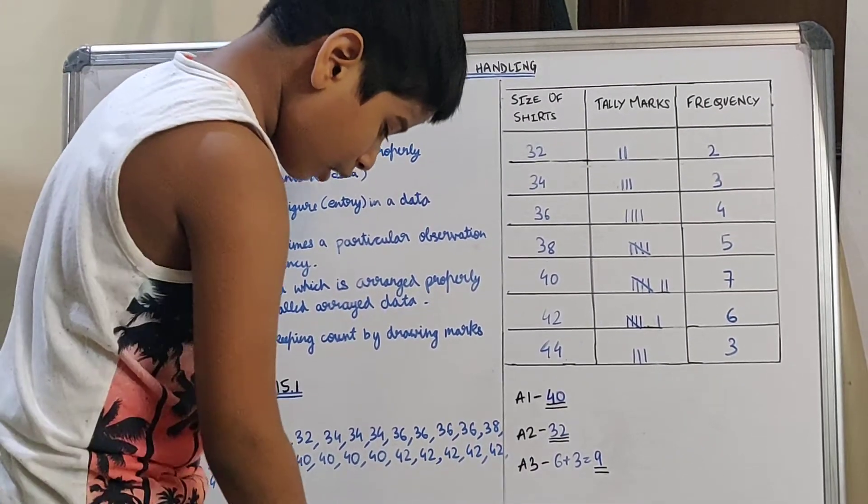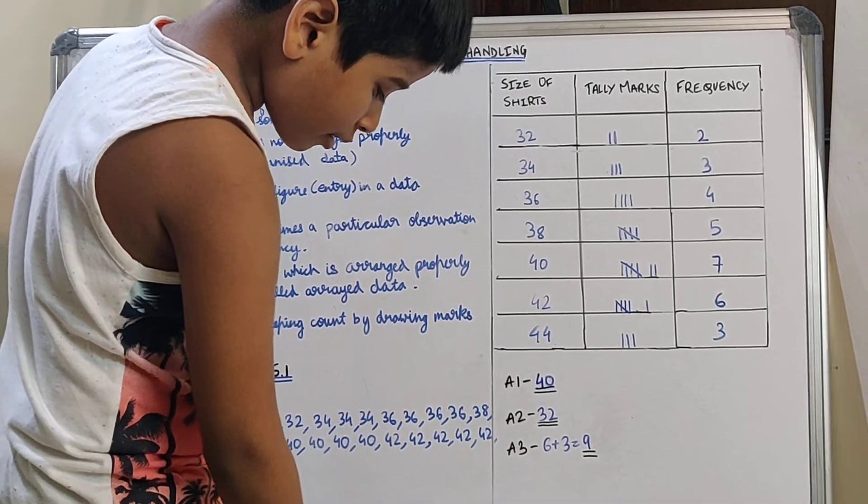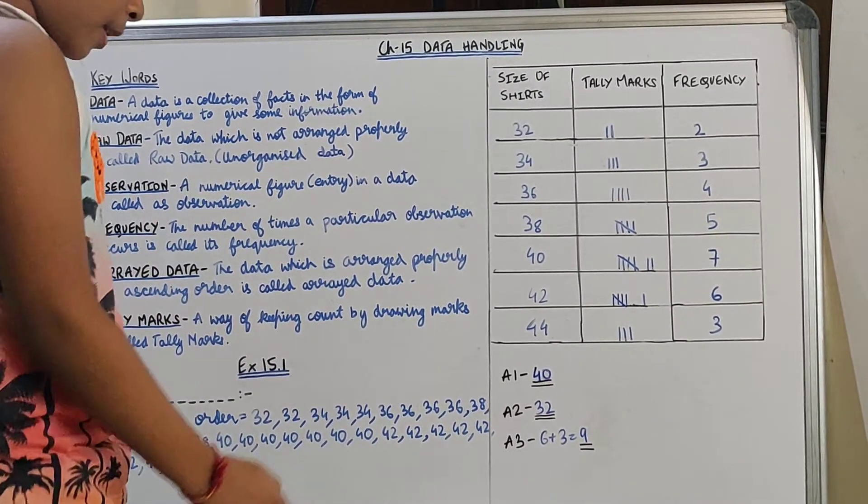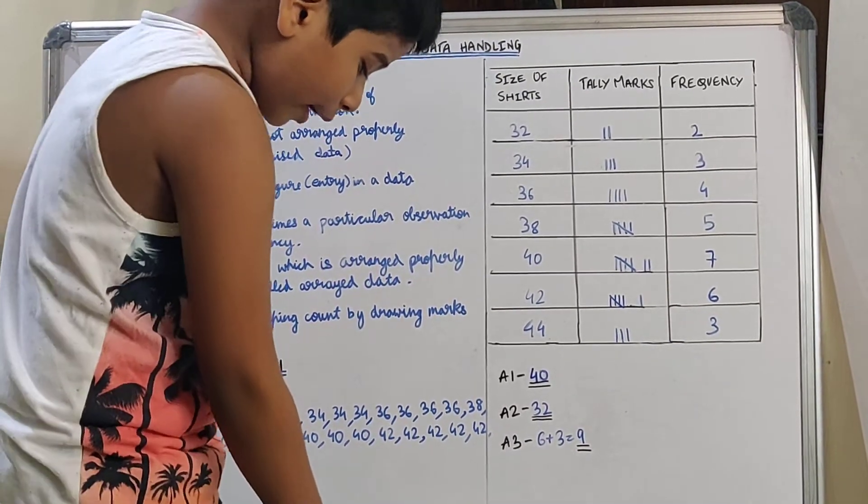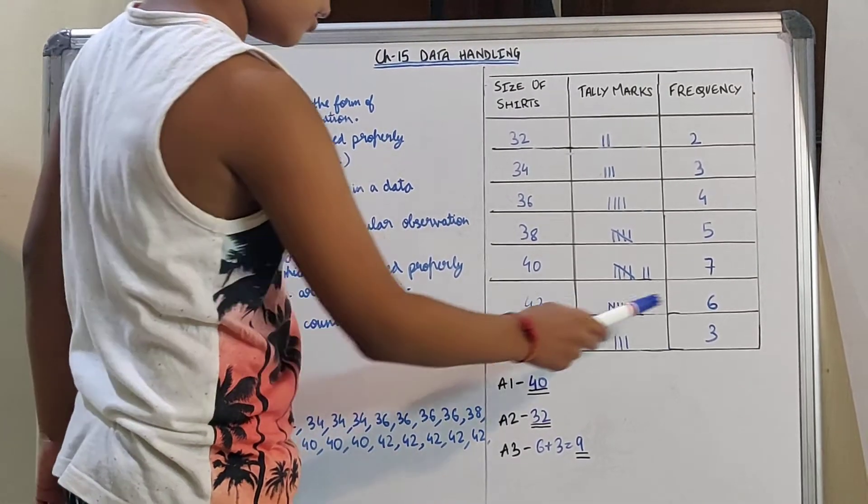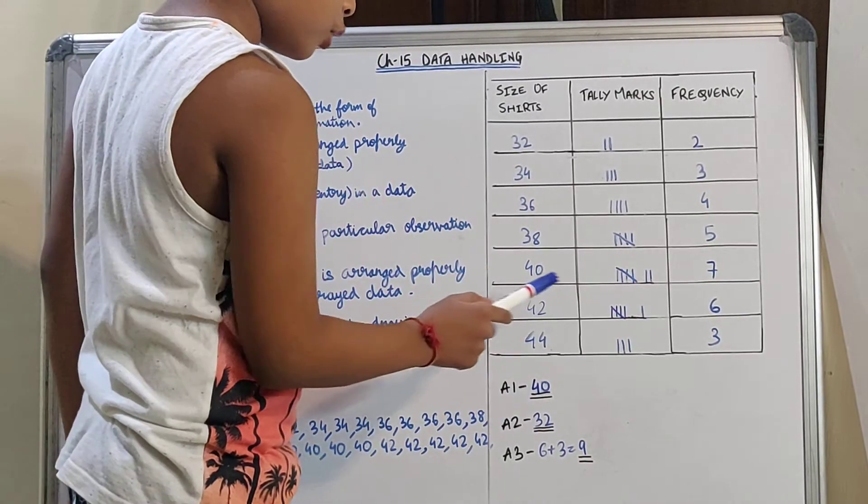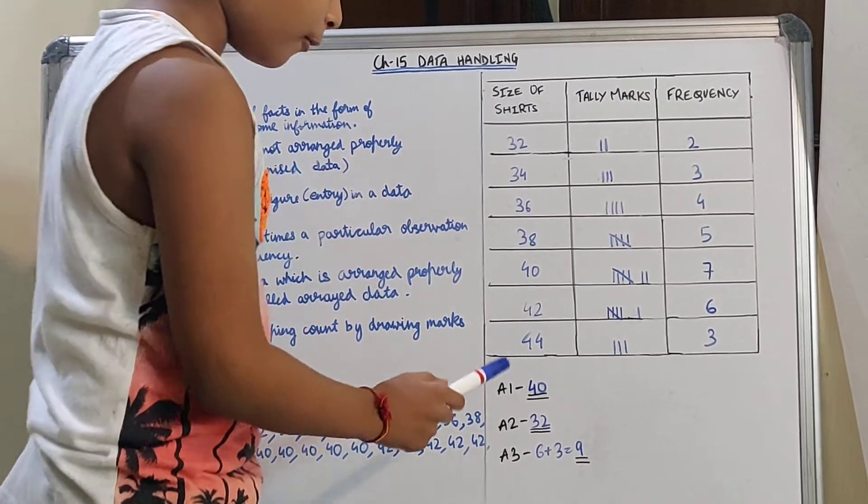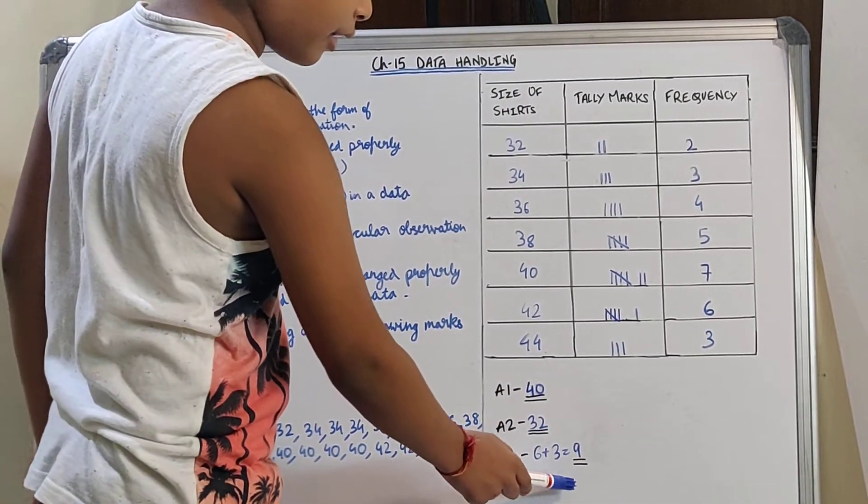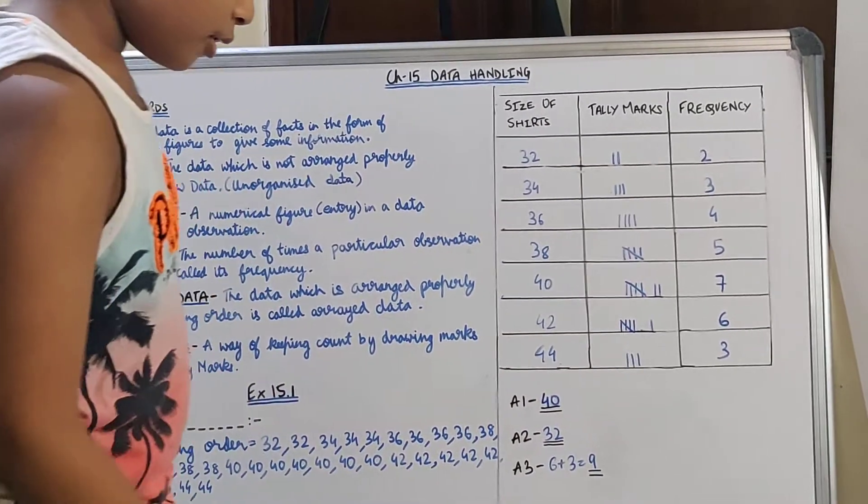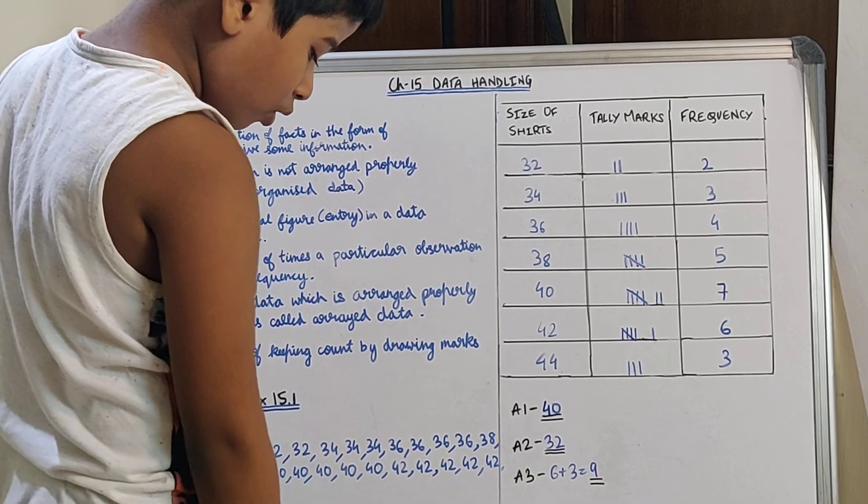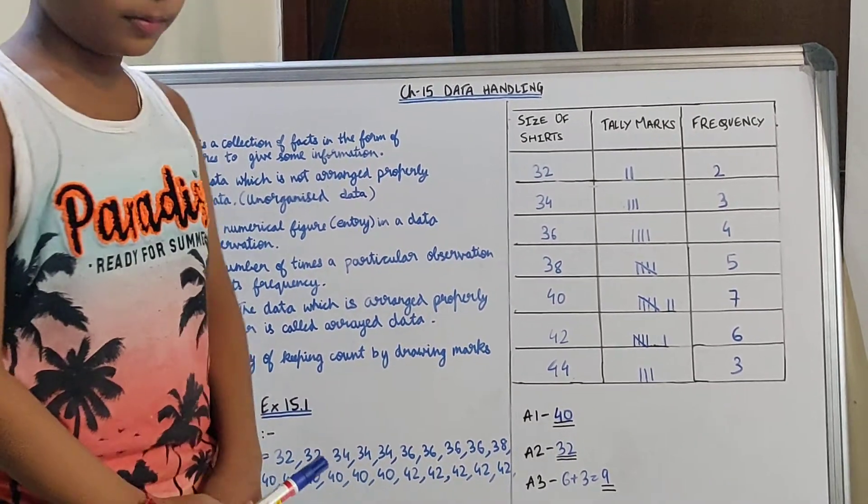Then answer 3. They have asked: number of shirts sold of size 42 or greater than size 42. So first you have to find number of shirts sold of size 42, which is 6. 6 shirts sold of 42 size. Then of 44 size, there are 3. Now add 6 and 3. 6 plus 3 equals 9. So 9 is the number of shirts sold of size 42 or greater than size 42. Thank you.